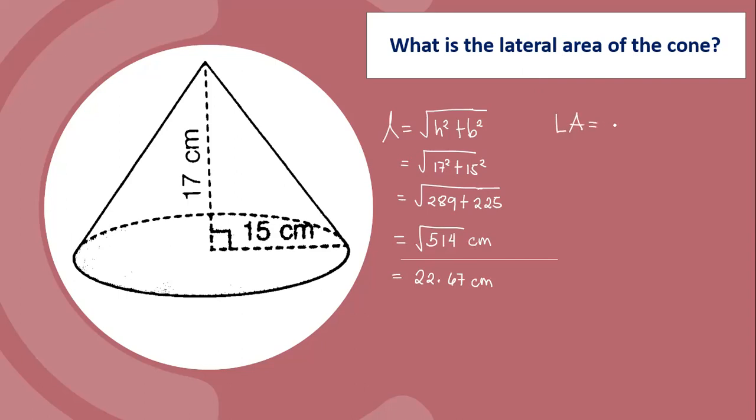LA is equal to pi times the radius times the slant height. So pi, 3.14, times the radius 15 centimeters times the slant height 22.67 centimeters.